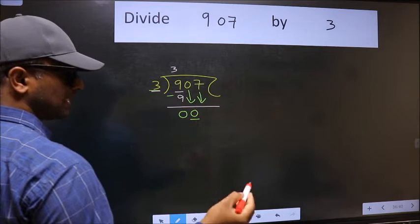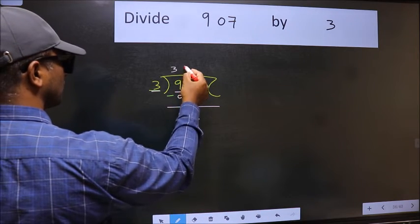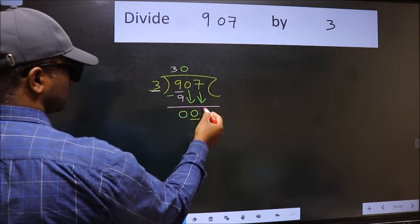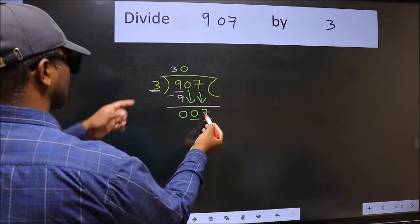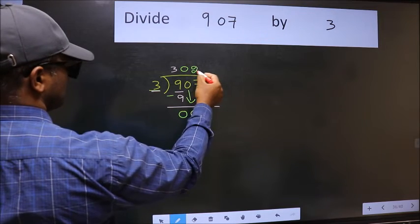The rule to bring down the second number is we should put 0 here. Then only we can bring this number down. Now 7. A number close to 7 in the 3 table is 3 times 2, which is 6.